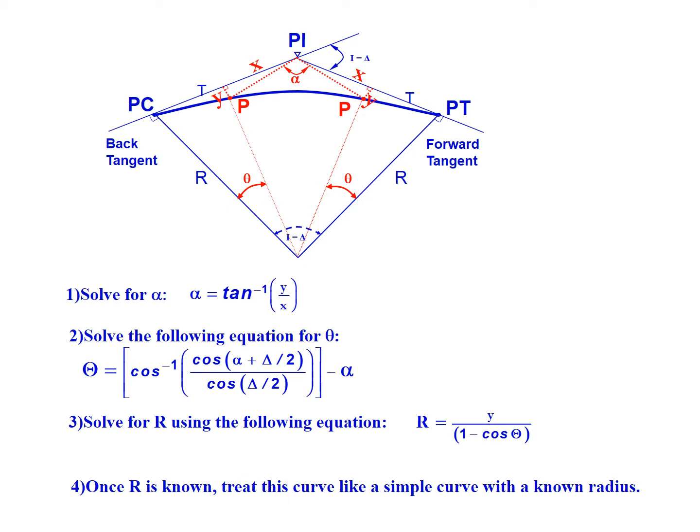Step three is to solve for the radius using the equation R equals Y over 1 minus cosine of theta. And then once we know R, we'll treat this curve like any other simple curve with a known radius and solve for any of the parameters of interest, the PC, the PT, length of curve, and so on.